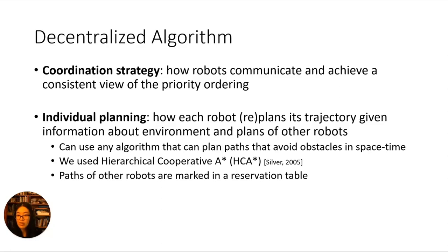Any individual path planning algorithm that can avoid obstacles in space-time — so that we can avoid the paths of higher priority robots — is suitable. In our implementation, we use a version of the well-known A-star algorithm called Hierarchical Cooperative A-star, proposed by David Silver. In this algorithm, paths of other robots are marked in a reservation table so that the search treats them as space-time obstacles.